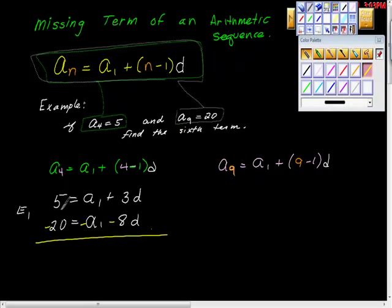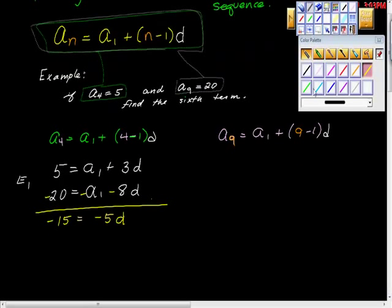And then look what happens here. We get 5 minus 20 is negative 15. Here's the elimination part. a1 minus a1 is 0. 3 minus 8 is negative 5.